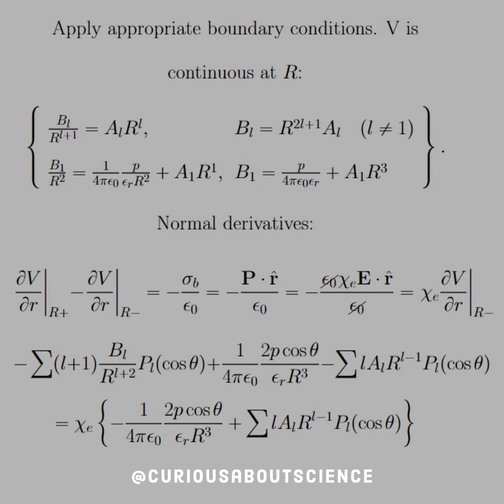But we also know that P is equal to epsilon naught chi E times the electric field. So, plugging all those in and bringing it back to where the electric field is now, the negative gradient of the potential,